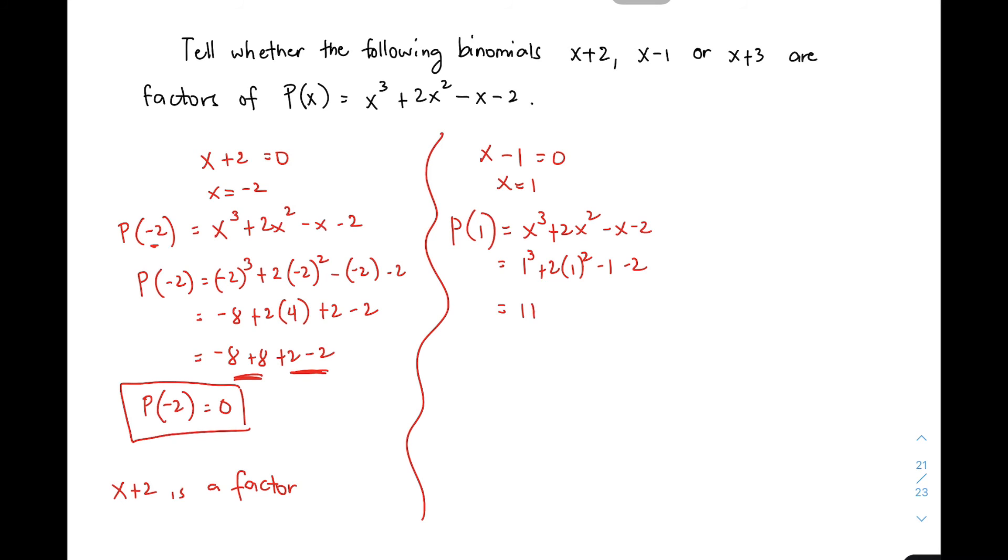Simplify natin, this is 1 plus 2 minus 1 minus 2. Mapansin nyo, yung 3 minus 3, so you have 0. Ang p of 1 natin, the remainder is 0. So automatic, yung x minus 1 natin is a factor. So yun na. So we have 2 factors.